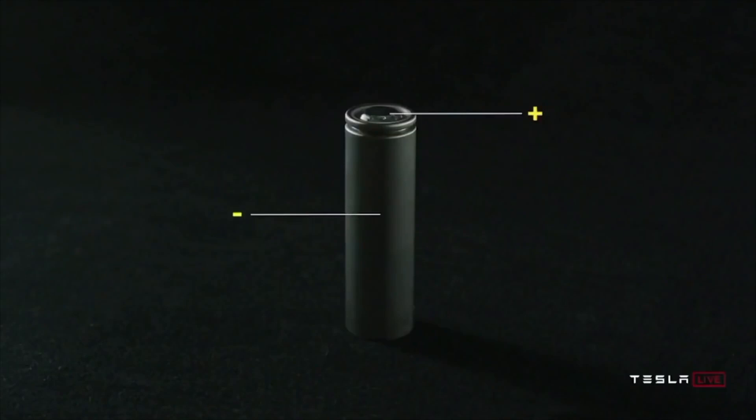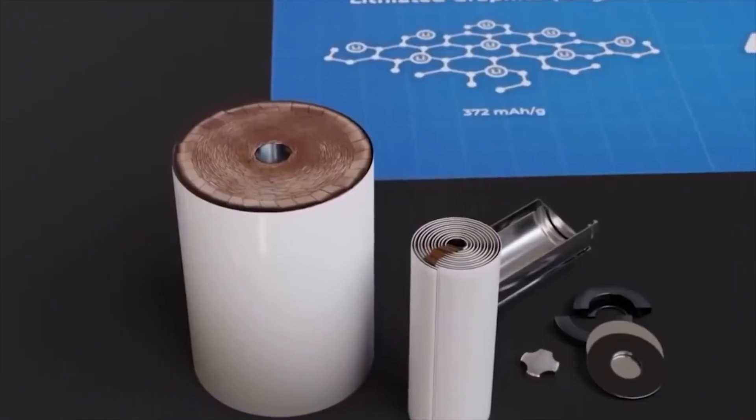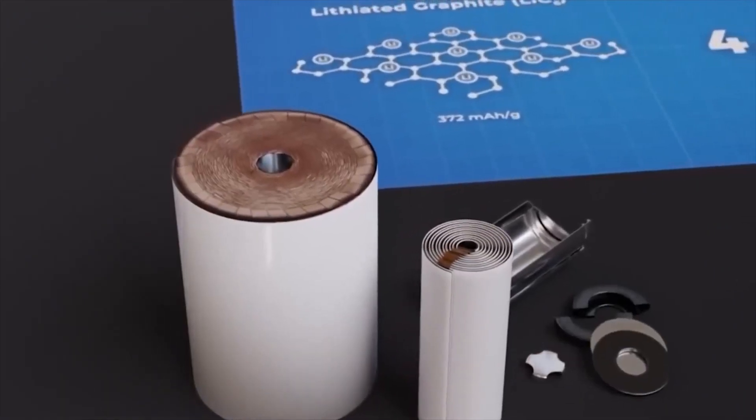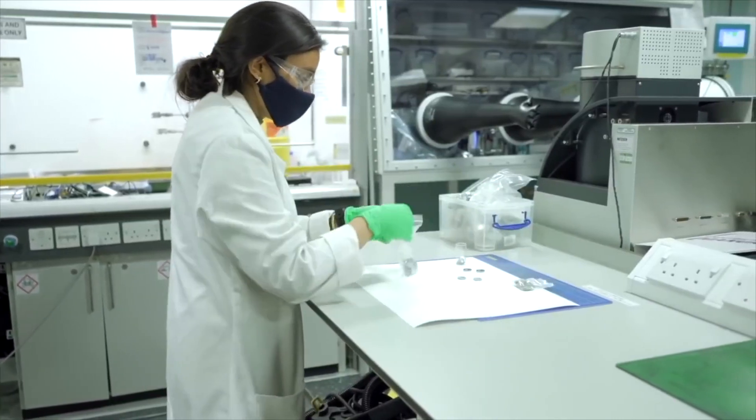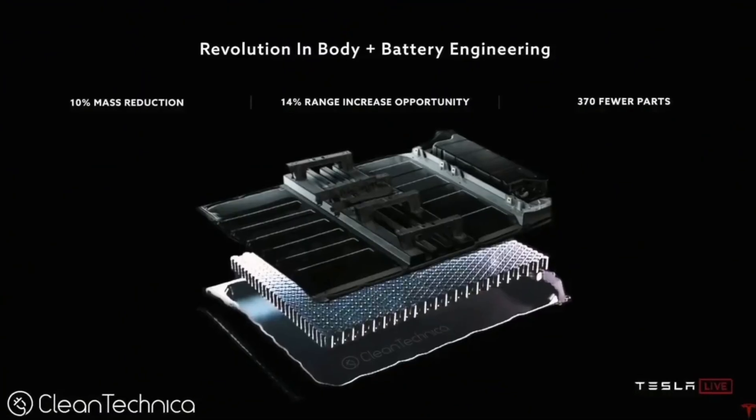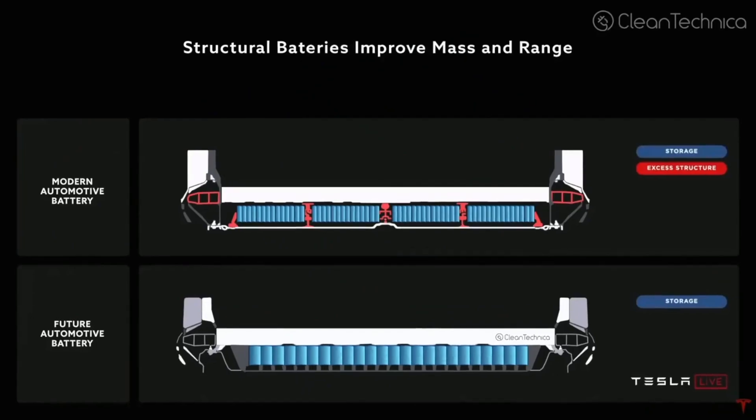At the end of September, the company started a hiring ramp for the 4680 pilot line. The hiring ramp suggested that Tesla found a potential solution for the calendaring issue Elon Musk briefly discussed at the Q2 earnings call.